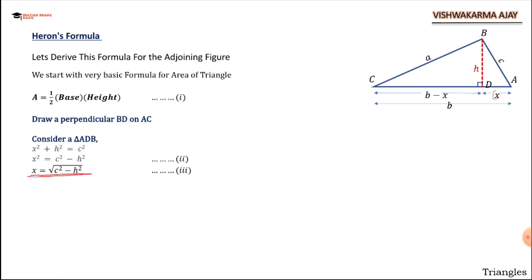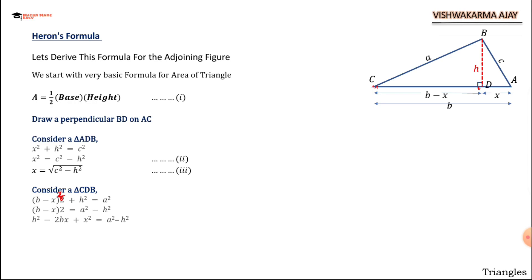Similarly, in the other triangle CDB, (b minus x) whole squared plus h squared equals a squared. Now expanding (b minus x) squared using the (a minus b) whole squared formula: b squared minus 2bx plus x squared equals a squared minus h squared.